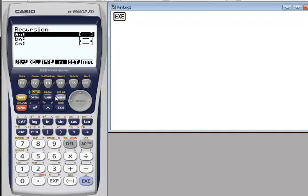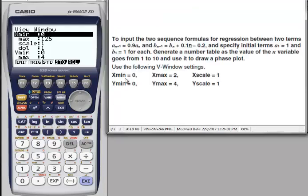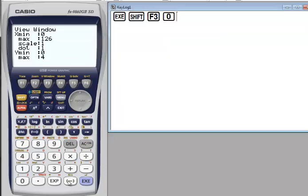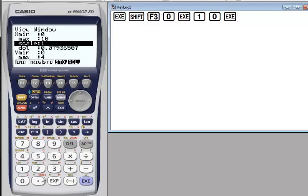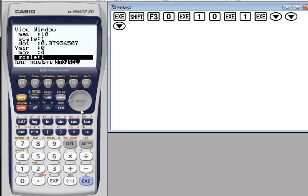To configure view window settings, press shift, then F3. The settings: x minimum is 0, execute. X maximum is 10, execute. X scale is 1, execute. Y minimum is 0 and y maximum is 4, y scale is 1. Then press exit.